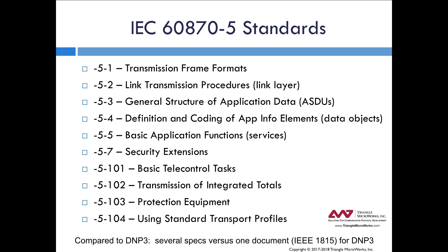One big difference here is that DNP3, once it was standardized by the IEEE, everything was put into one document, which is kind of convenient. The IEC does not work that way because of the way it's architected, and so you have these several different sections.